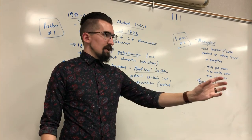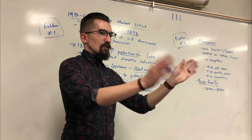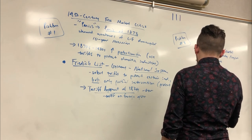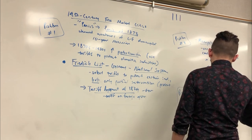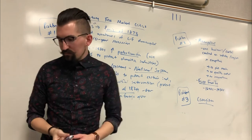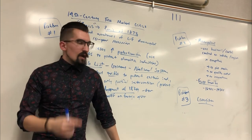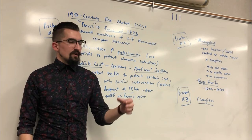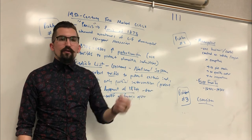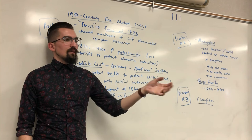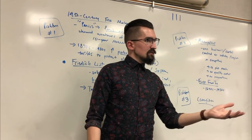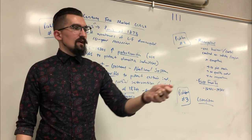Another problem is cronyism — when business and politicians collude through bribery. For example, a business could pay a politician to lease public land containing oil without a public auction, getting it cheaply instead of competing fairly. Politicians benefit from bribes; businesses benefit from savings.